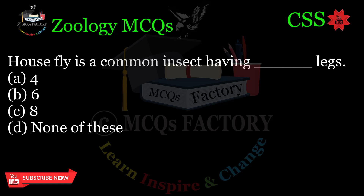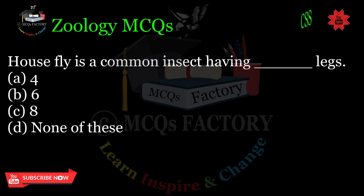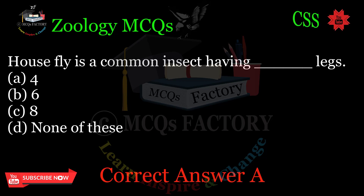A housefly is a common insect having how many legs? A. 4. B. 6. C. 8. D. None of these. Correct answer: A.